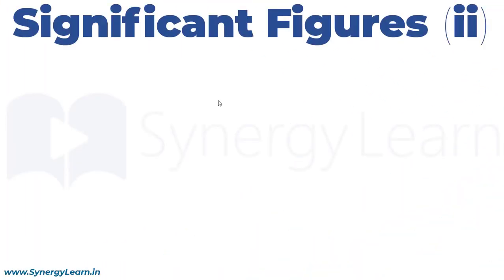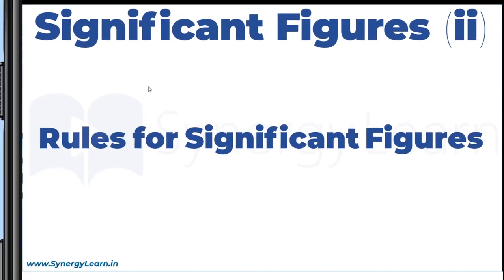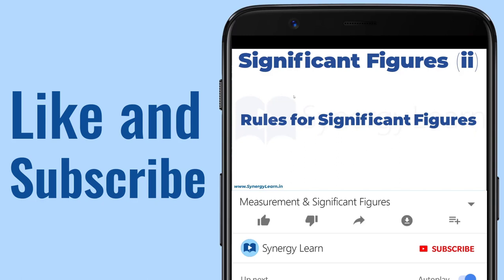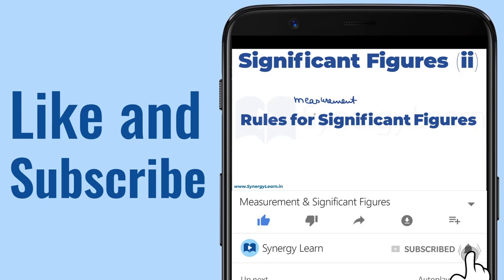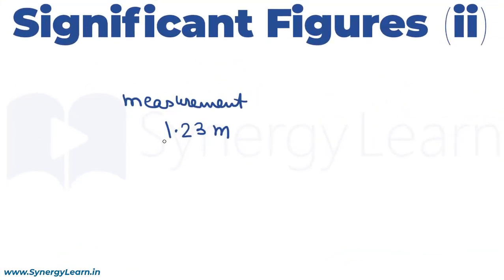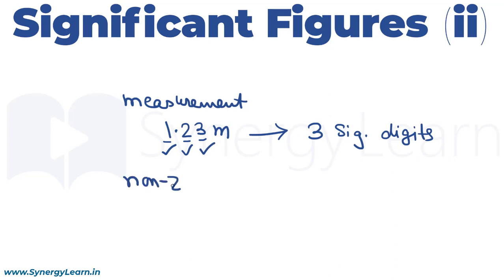In this continuation video on significant figures, we will learn about rules for significant figures. Significant figures apply in measurements. Say a quantity is measured as the digits 1, 2, and 3 — these have come from measurement, hence they have significance. Therefore this measurement has three significant digits. All nonzero digits coming from a measurement are significant.